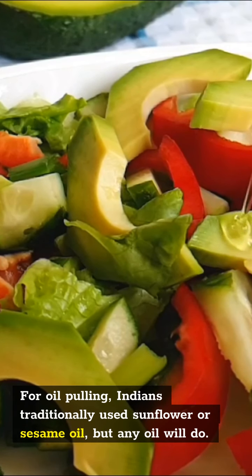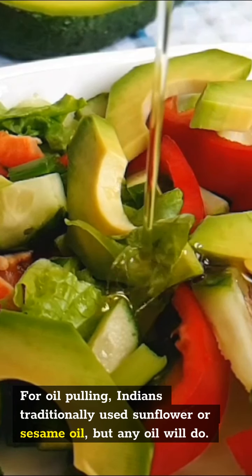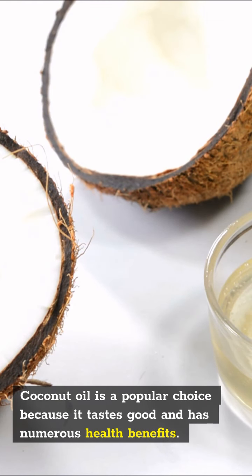For oil pulling, Indians traditionally use sunflower or sesame seed oil, but any oil will do. Coconut oil is a popular choice because it tastes good and has numerous health benefits.